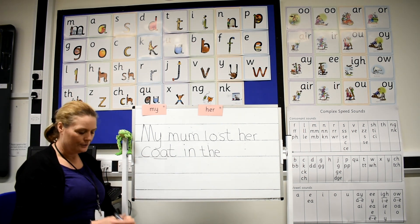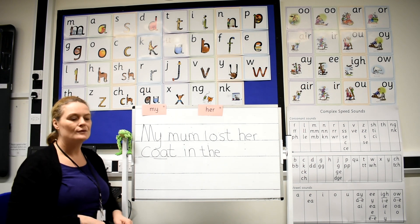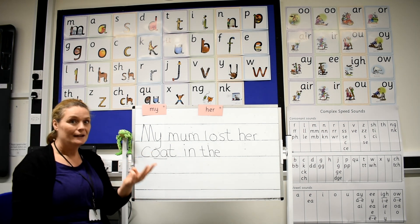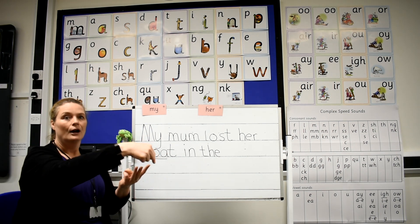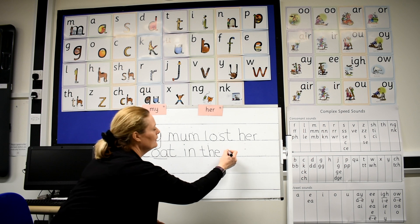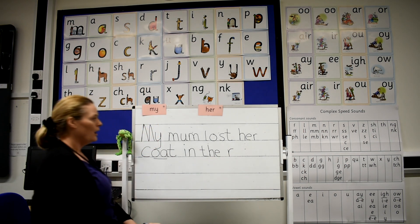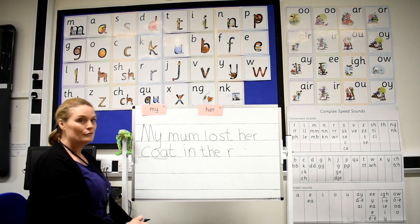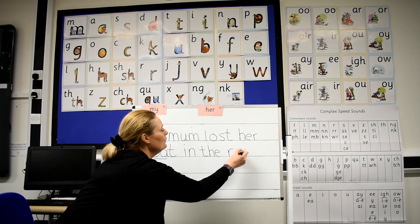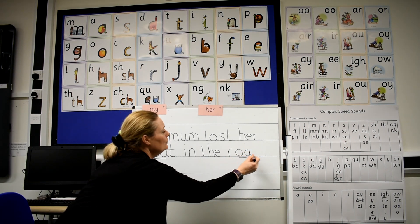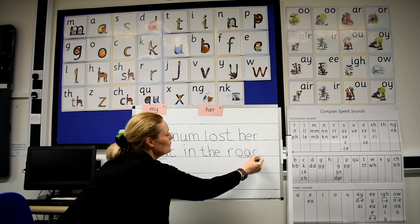Road. Let's get our Fred fingers — can you sound out road? Show me your Fred fingers. Well done. Let's pinch the sounds: R, OA, D. Road. Well done. Let's write this: R-OA. OA — special friends, just like in coat. OA. A. R-OA-D. Round the dinosaur's bottom, up his tall neck, and down to his feet.